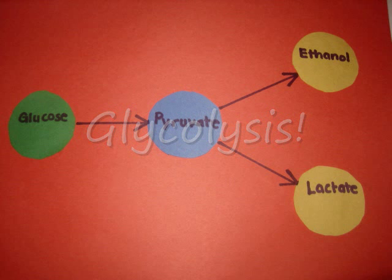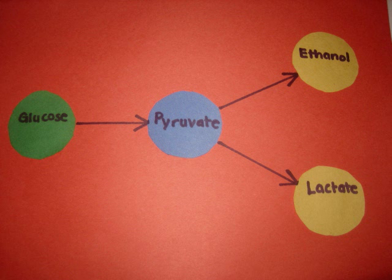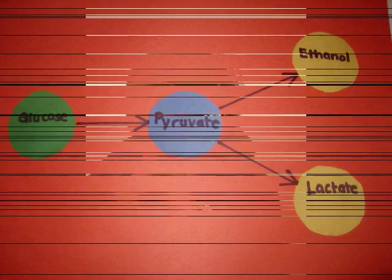Glycolysis occurs when a molecule of glucose is oxidized into pyruvate. It occurs in most organisms and is the most ancient metabolic pathway. After pyruvate is produced, two processes occur depending on whether or not there is a presence of oxygen.